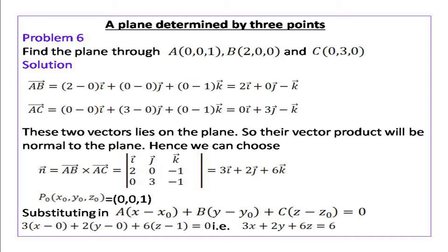We can find vector AB as 2i + 0j - k and vector AC as 0i + 3j - k. Both vector AB and vector AC are vectors lying on the plane. So if we find the cross product of these two vectors we get vector AB cross vector AC, which will be normal to the plane. We let vector n = vector AB cross vector AC.